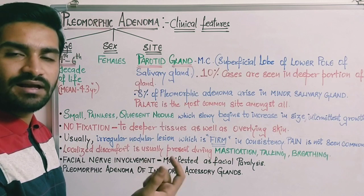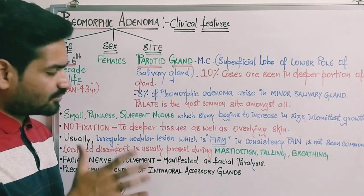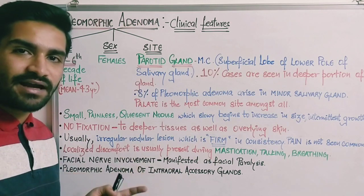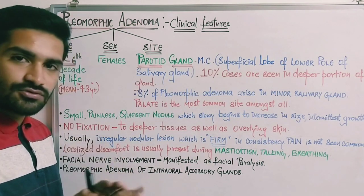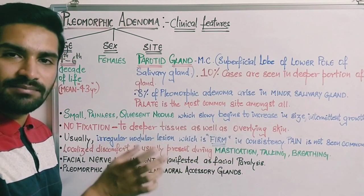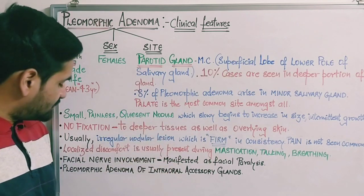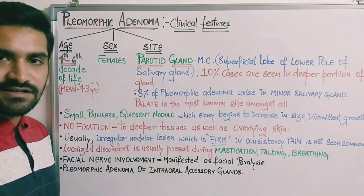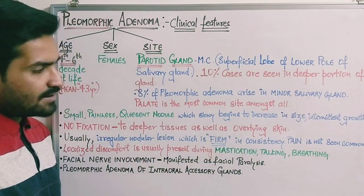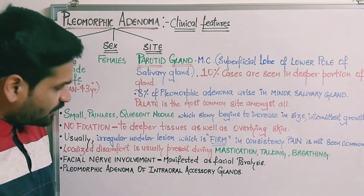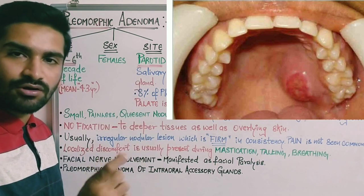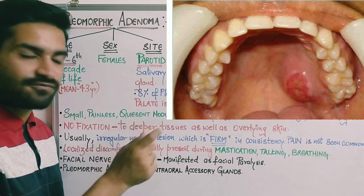Small tumors are more movable compared to large tumors, as larger tumors cover more space and movement is decreased. The tumor shows no fixation and is free from deeper tissues and overlying skin, meaning it will be movable, soft, and rubbery in consistency. It is usually an irregular nodular lesion with no defined shape. Pain is not usually seen, though a firmer consistency is seen in minor salivary gland tumors of the palatal mucosa.